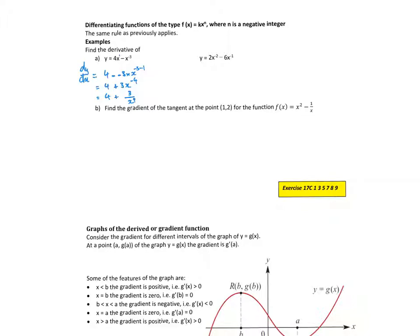What about the next one? Same thing. dy/dx is equal to: negative 2 comes out the front, so it becomes negative 4x to the negative 2 minus 1, which is minus 3. Negative 1 comes out the front, and negative 1 times negative 6 is positive 6x to the minus 1 minus 1, which is minus 2. Don't forget we could possibly write it with a positive index, putting the terms into the denominator.